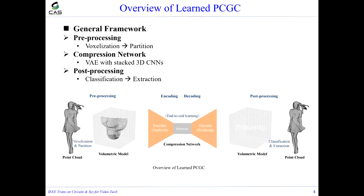This is the general framework of the proposed learned PCGC. It contains three modules: a pre-processing step, an end-to-end learned compression network, and a post-processing step. In pre-processing, the raw point cloud is voxelized to a volumetric model and partitioned into small cubes. In the compression network, the volumetric model is encoded and decoded by a 3D convolution-based variational autoencoder. In post-processing, the decoded volumetric model is converted to point cloud through classification and extraction.